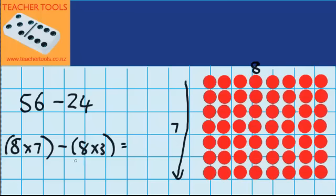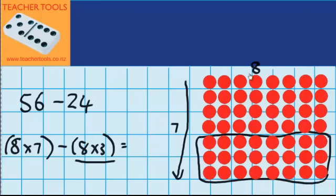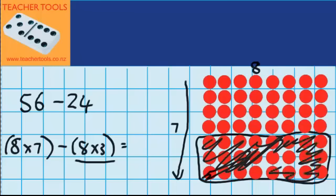Now my question says I need to take away 8 groups of 3. So along here are 8 groups and if I go up 3, that means I'm looking to take away this amount here. So I'll cross those out and we'll see what we're left with. And you can see I'm left with 8 groups of 4. 8 times 4. Now I know that 8 times 4 is 32.